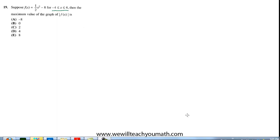Problem 19: Suppose f of x equals half x squared minus 8 for the interval when x is between negative 4 and 4 inclusive. Then the maximum value of the graph, absolute value of f of x, is what? So what are they really asking here? They're saying they want us to maximize not f, but the absolute value of f.